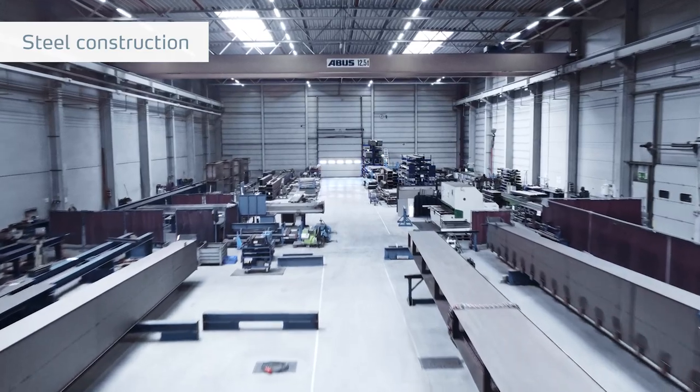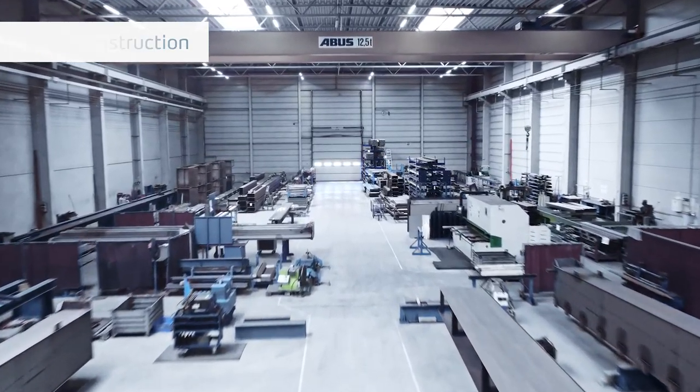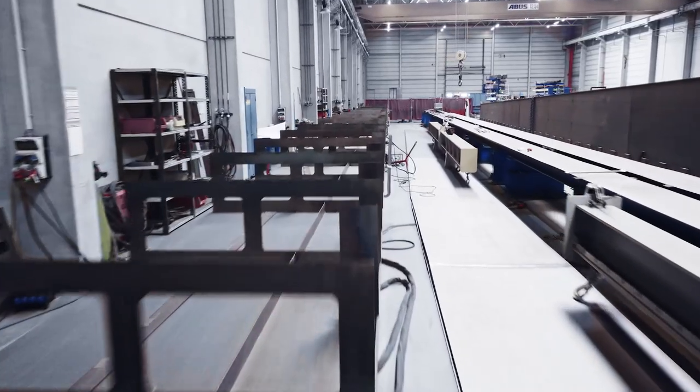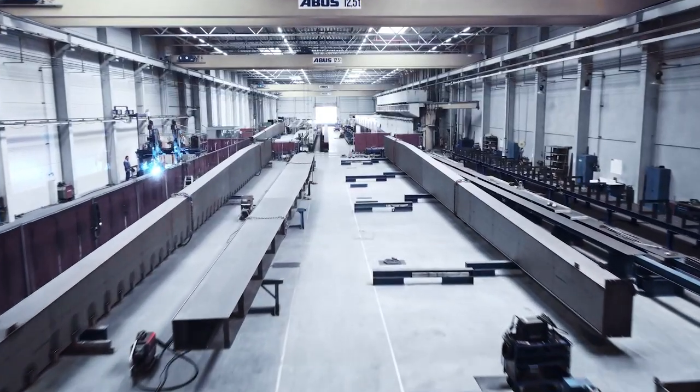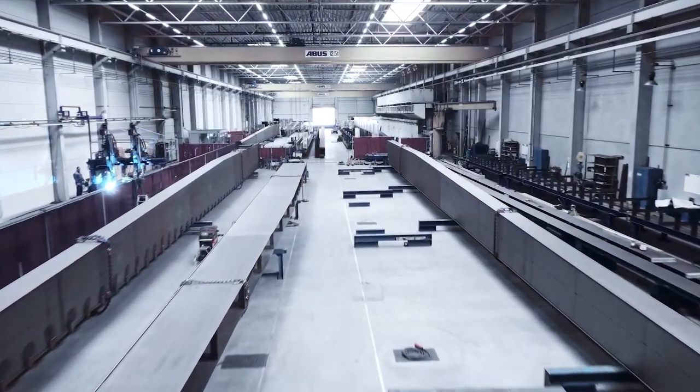The core elements of our stacker cranes are produced in the steel construction. This includes manufacture of the bottom carriages and manufacture of the lifting mass for pick-up and guiding of the lifting carriage.